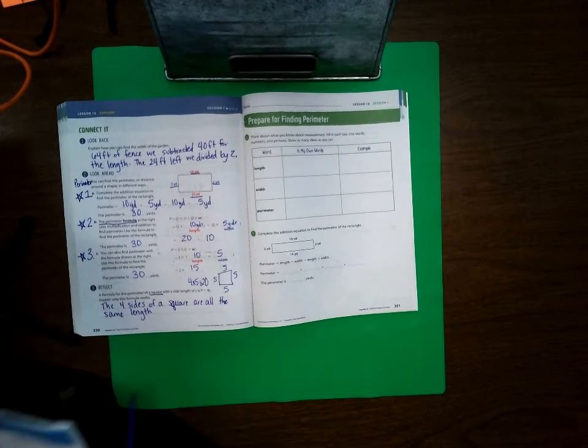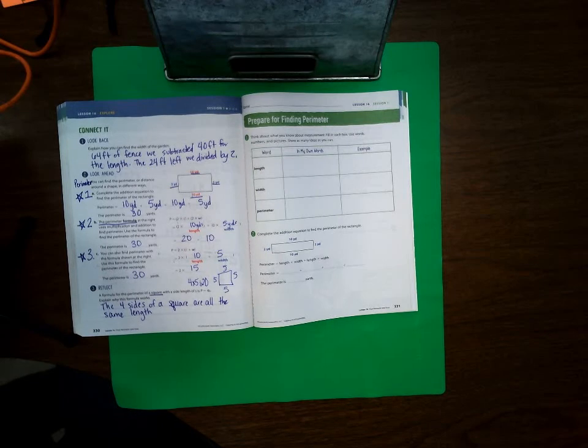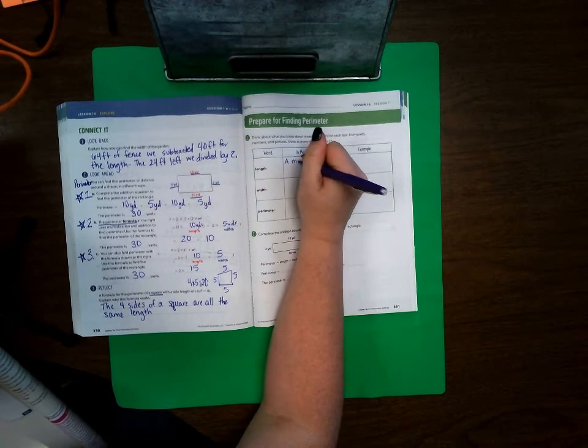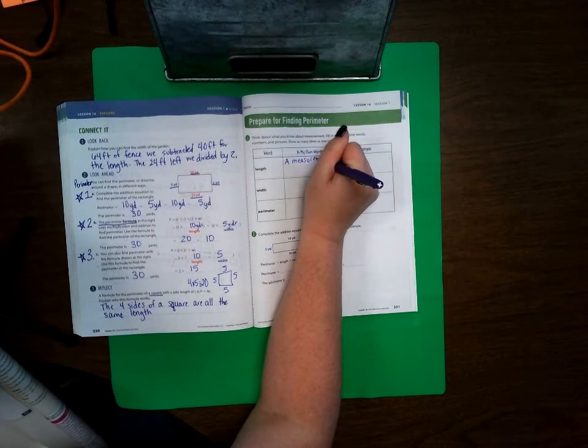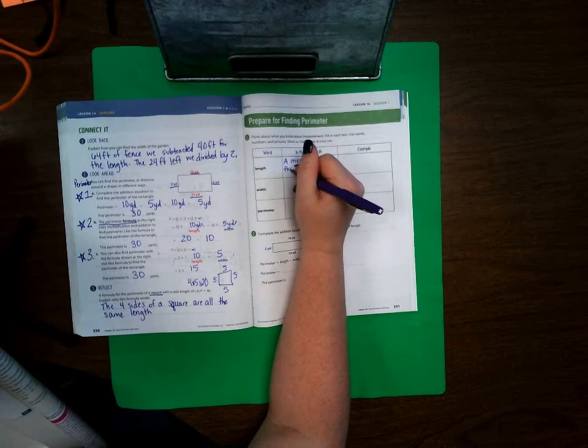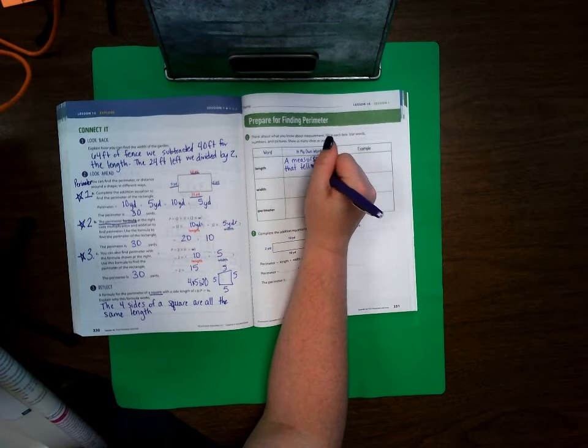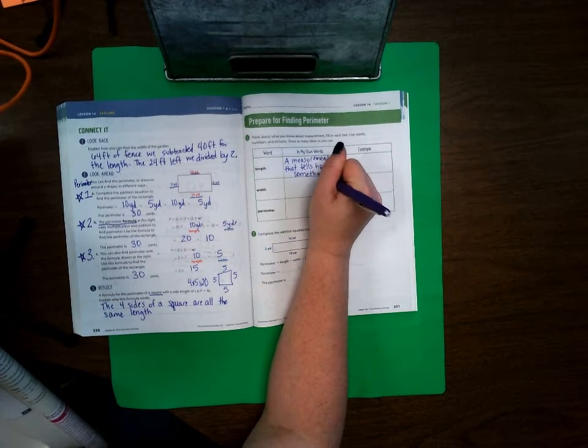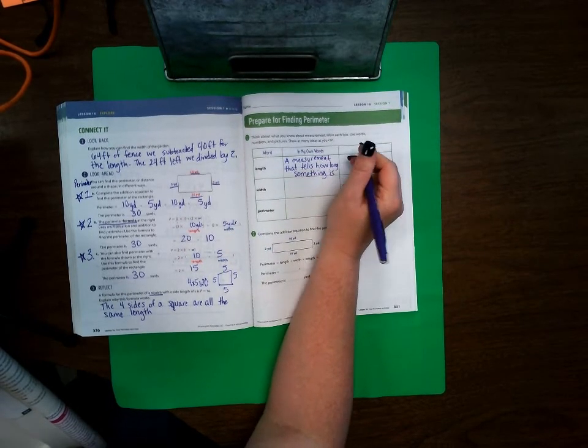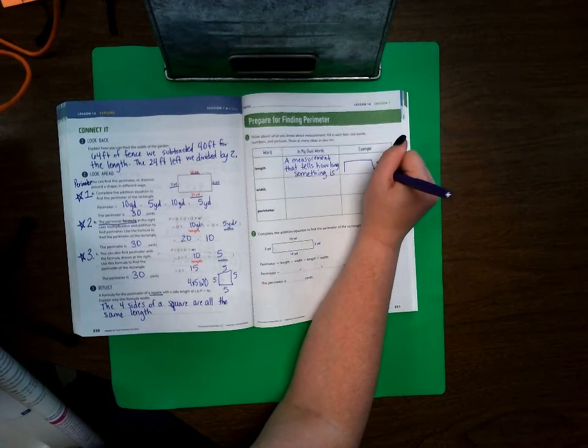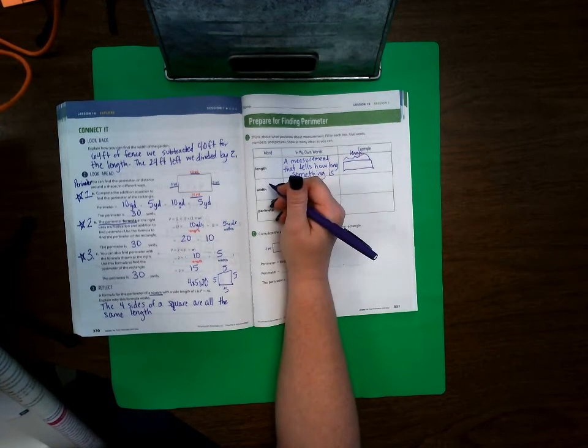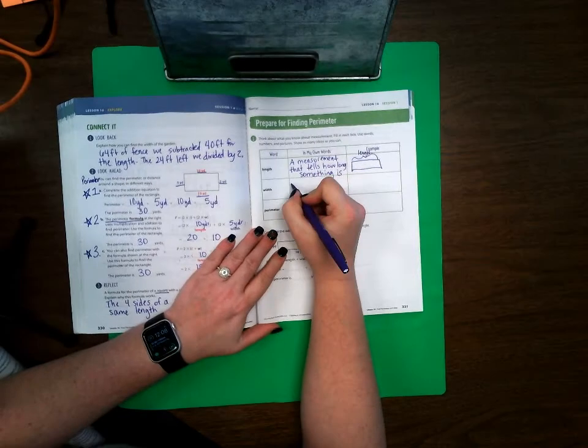Okay, page 331. Our word that we're learning is length, and in my own words, length is a measurement that tells how long something is. So if I have a shape here, this is the length. Width is a measure...